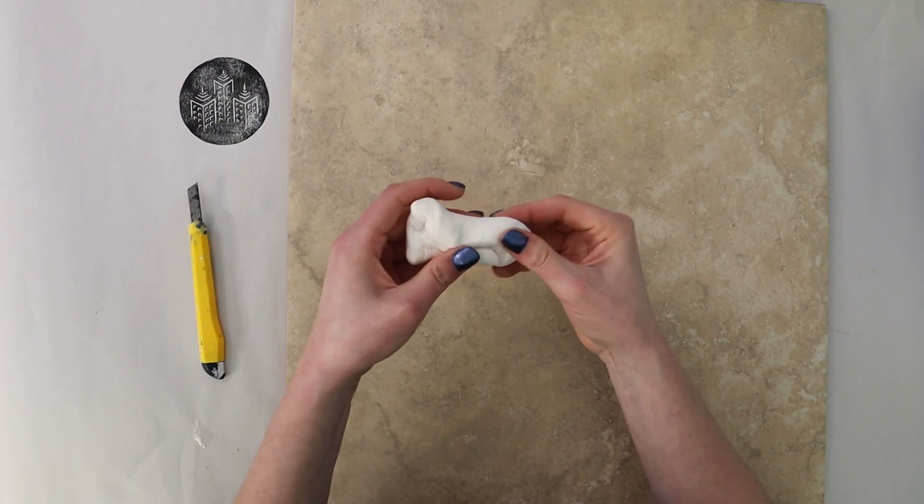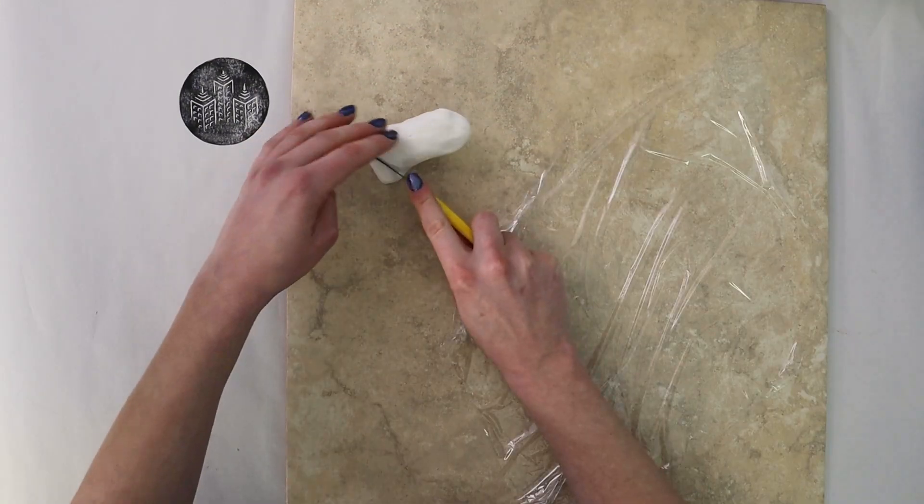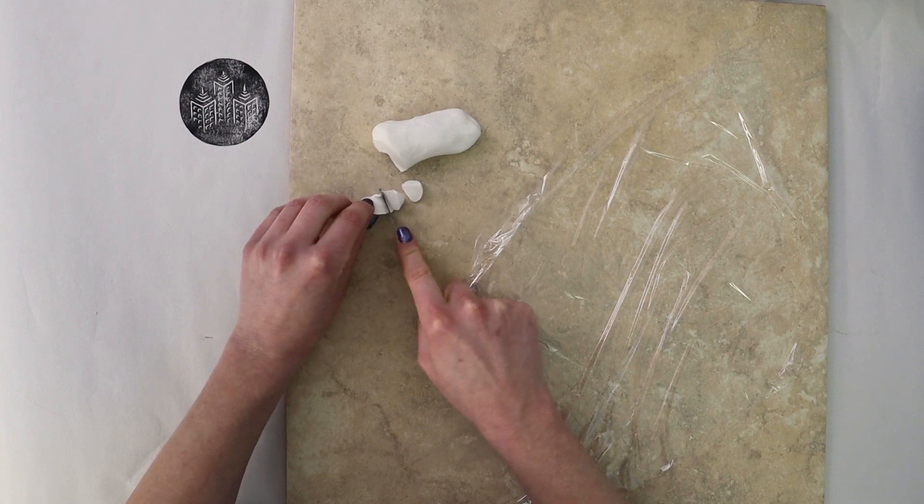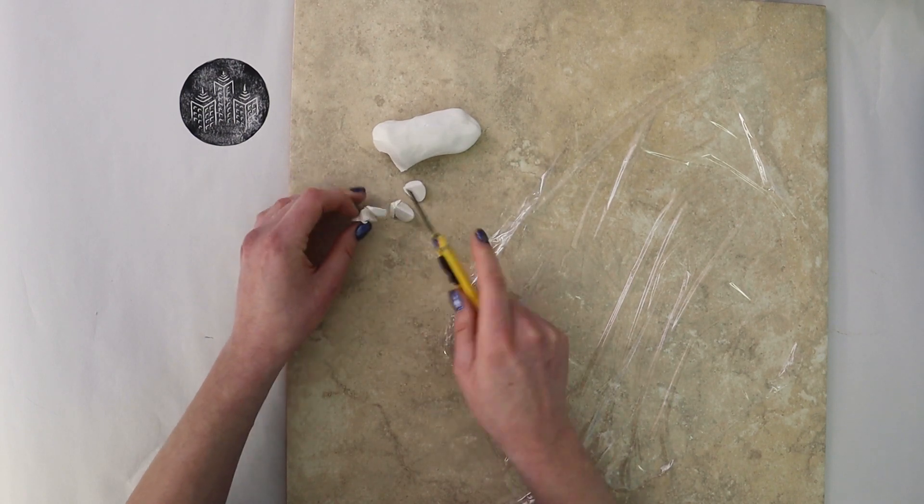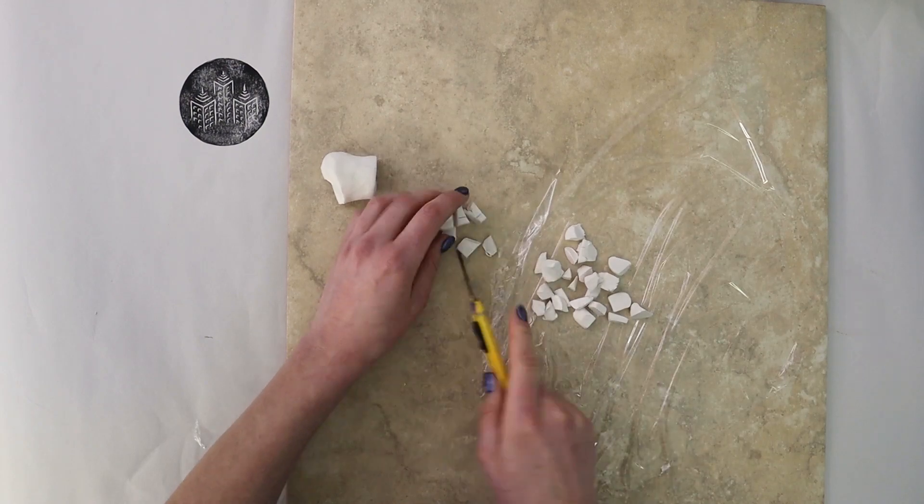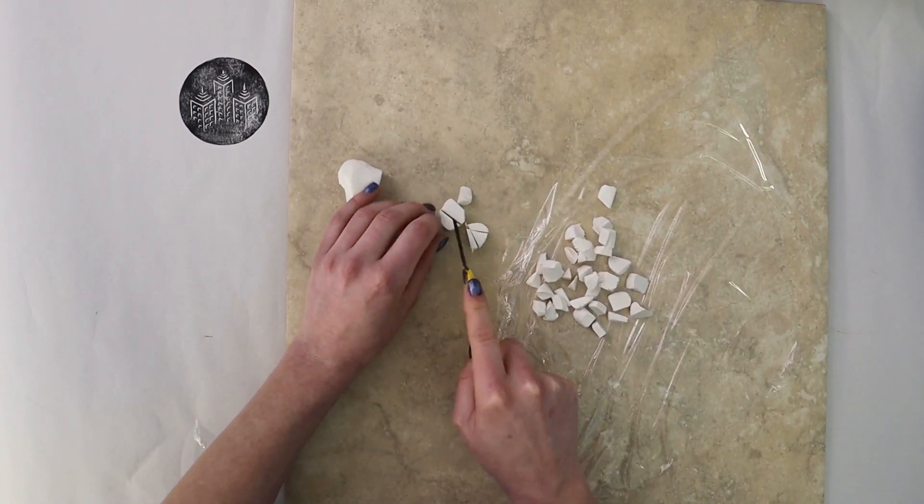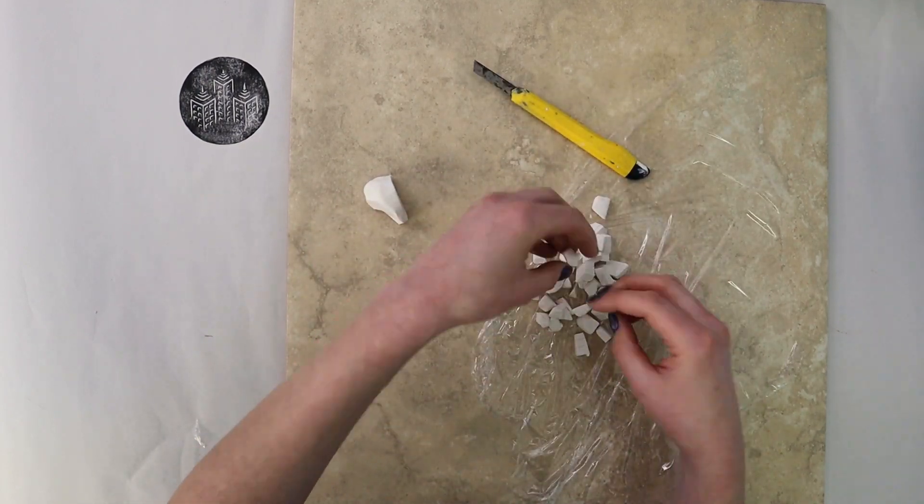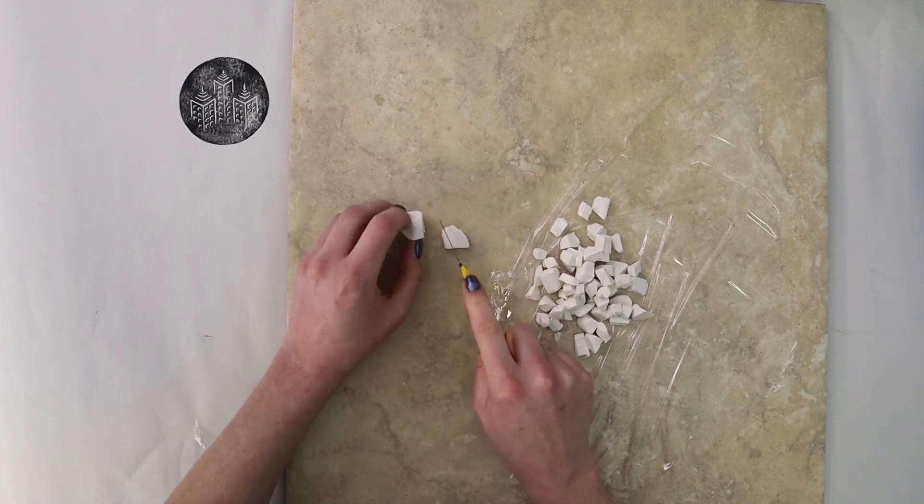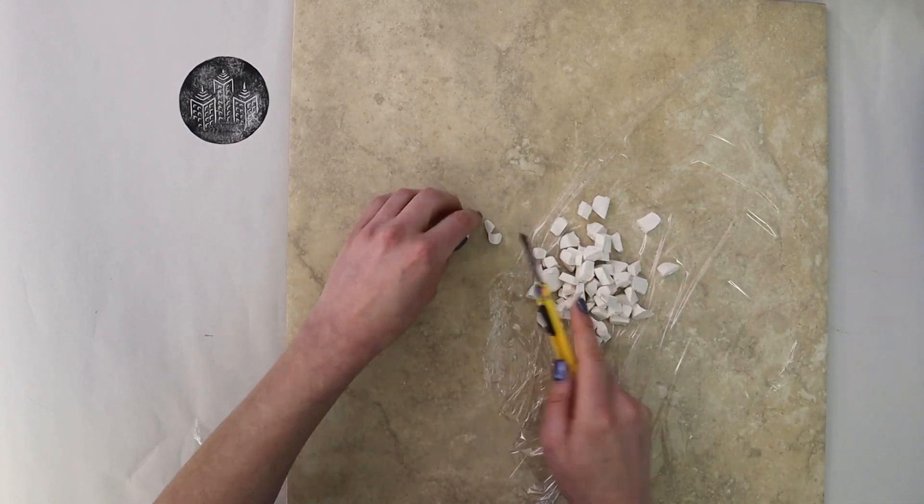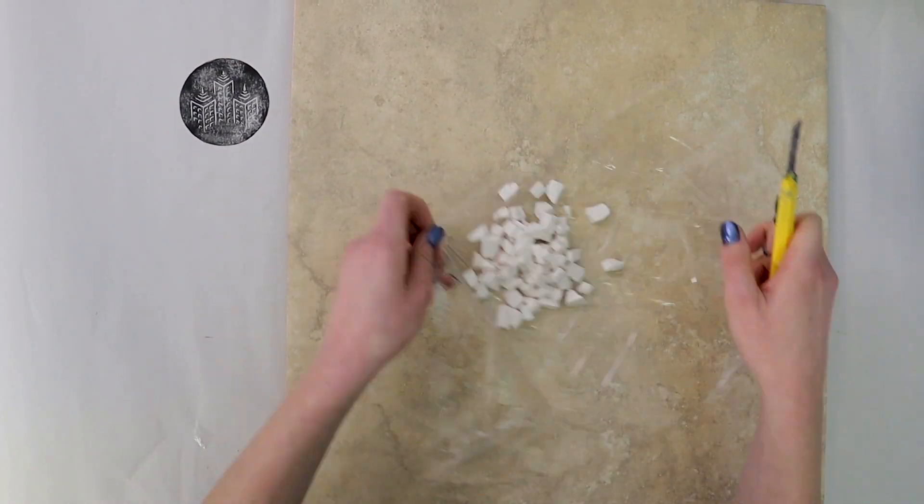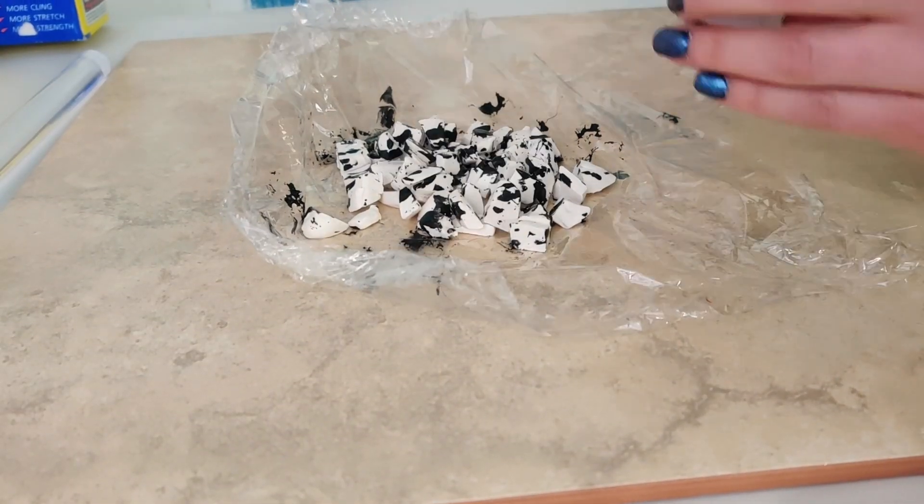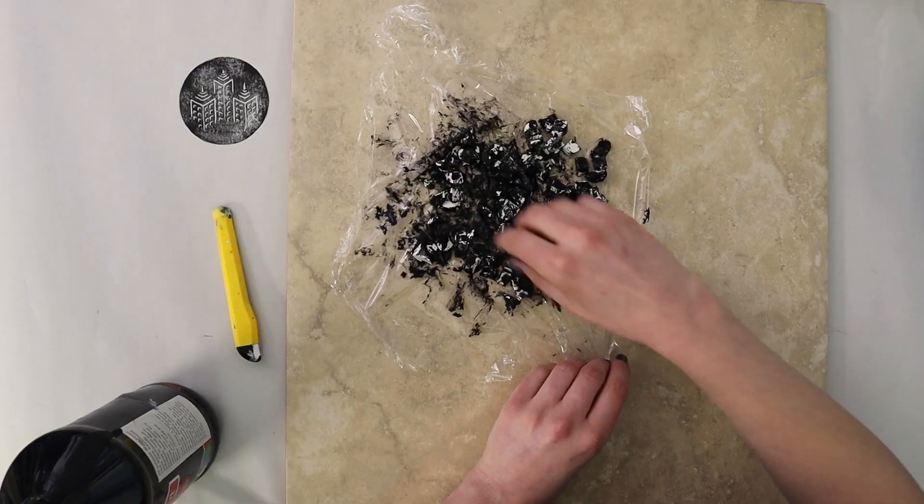Once your Sculpey is a workable consistency, you want to chop these up into kind of irregular pieces so that you have a whole bunch of different shapes and sizes. Place this on some saran wrap because the next thing we're going to do is add some paint to it, so it's going to get a little messy. You can do this in a Ziploc bag too to shake it up, but I like to use this on saran wrap because you're going to be able to actually spread this out and it will dry quicker, because we want this to fully dry before moving on to the next step. Make sure they're fully coated and then let them dry.